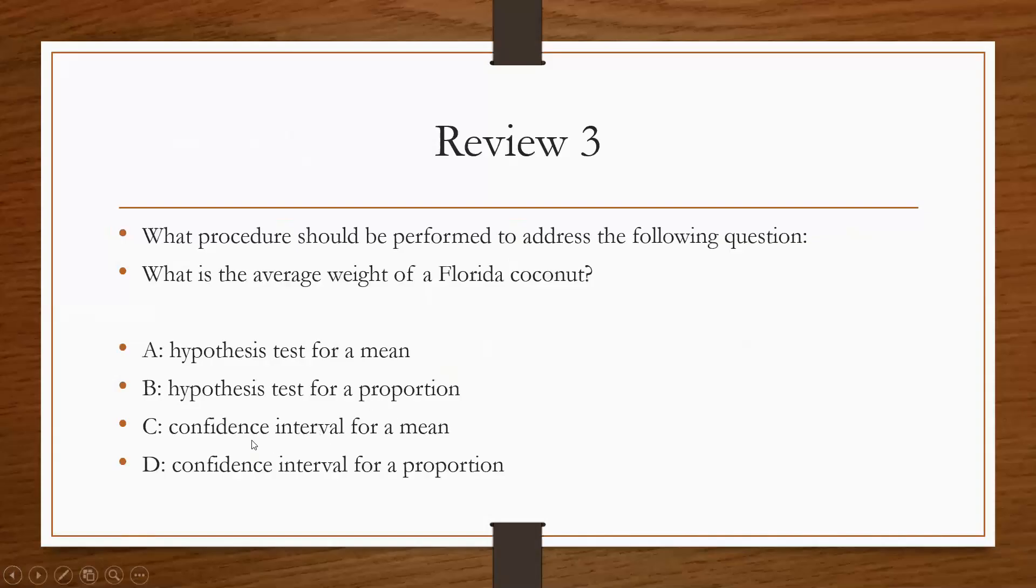It's going to be the confidence interval for a mean because it's not giving you any kind of thought-up hypothesis. It's not saying I think the average weight is going to be this for the null and the hypothesized, the alternative hypothesis would be higher. It's simply just saying what is the average weight? So you'd just be using a confidence interval. You'd just be using all the different weights that you found and just plugging those in with a bootstrap. So yeah.